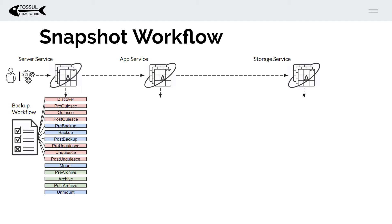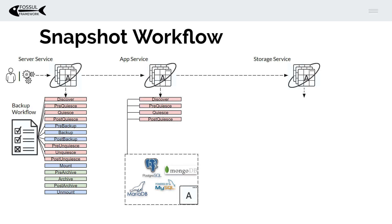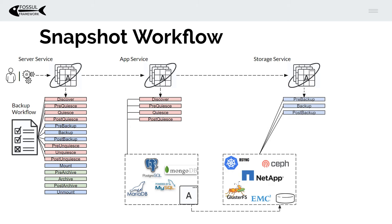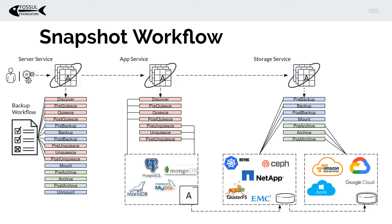Now I'm going to step through what we'll see in the demonstration. We trigger a backup through the server service. It first reaches out to the MariaDB database through the MariaDB plugin, gathers information in the discovery phase, then quiesces MariaDB bringing it into a consistent state. Next, through the storage service, it executes the Gluster plugin to create a snapshot. Then it returns to the application service to unquiesce MariaDB, restoring normal operation. It then mounts the snapshot and finally archives it to the cloud using the Amazon S3 plugin, then unmounts the snapshot completing the backup.